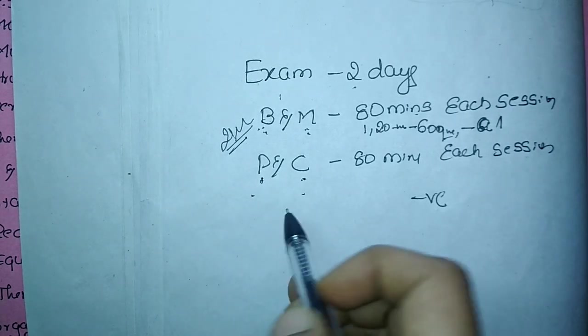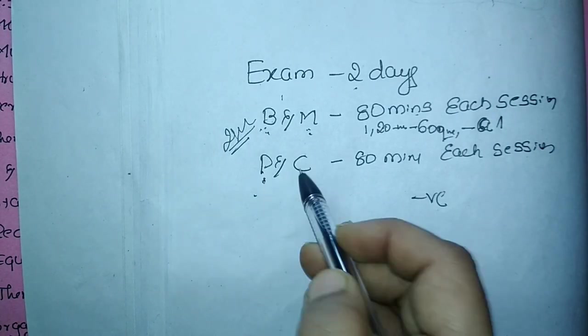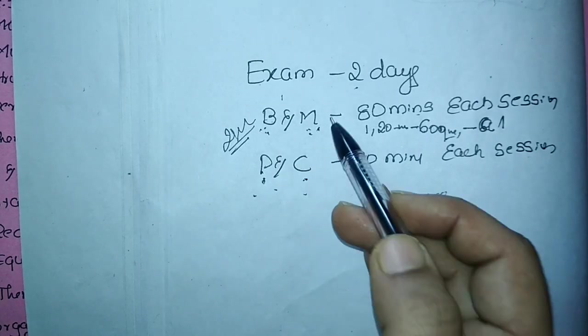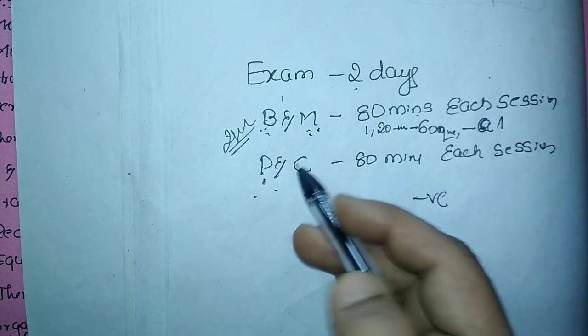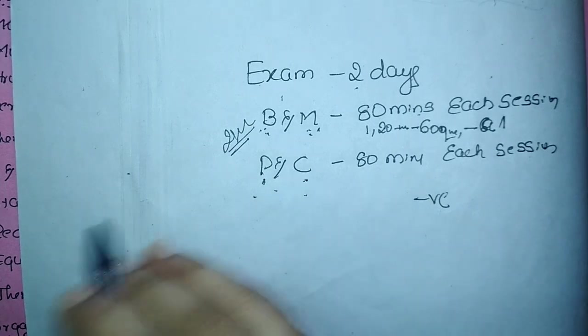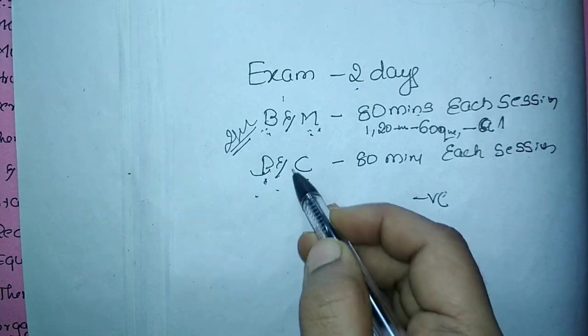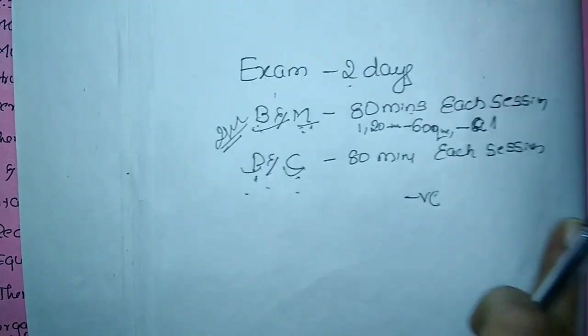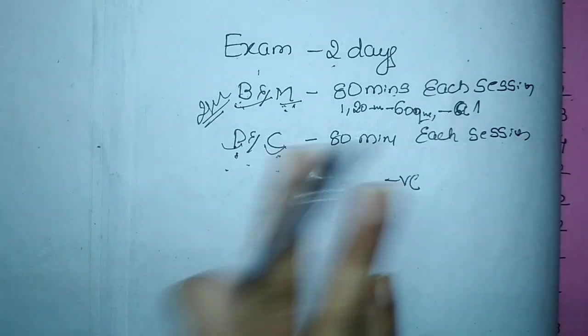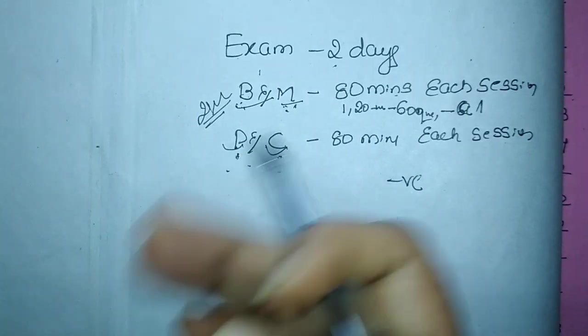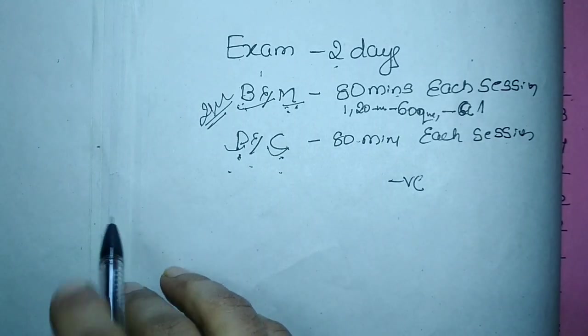So those who are writing only PCM, they can write and they can go. They can write the exam. Those who want to take even both the options, those who are like PCMB students, they have to write physics, chemistry, maths as well as bio. So this is about just a brief introduction or brief information regarding the Karnataka CET exam.